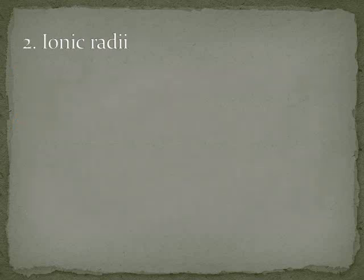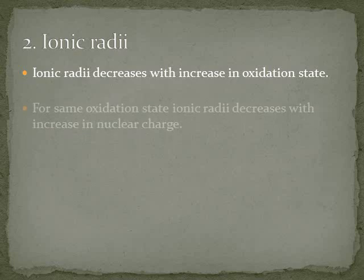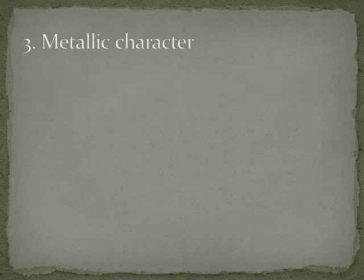Ionic radii — ionic radii is like: if oxidation state is less, then with the same nuclear charge, the ionic radii is less than the other.